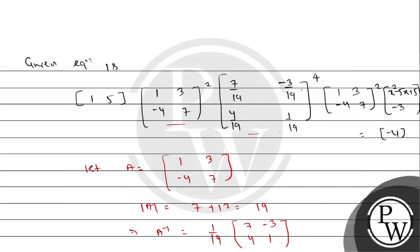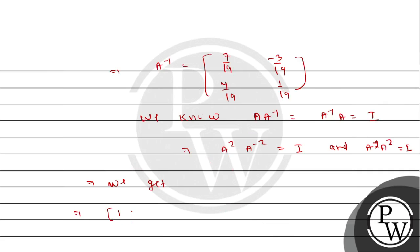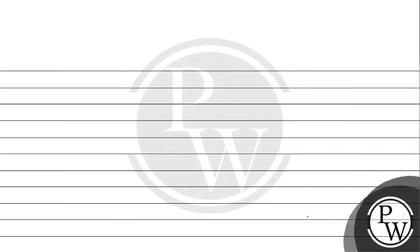When we break the matrix power 4 into power 2, A squared into A inverse squared gives the identity matrix. Applying this, we get: row matrix [1 5] into the column matrix [x²-5x+5; x²-5x+5] and [4; -3] equals -4.